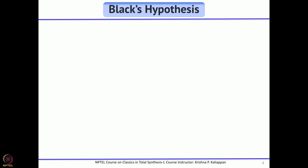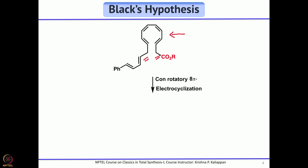Black's group proposed a biogenetic hypothesis. They proposed that if nature started with a tetraene — an octa-tetraene — having two side chains at the terminal carbons, upon heating under thermal conditions, a conjugated tetraene would undergo a thermal electrocyclization reaction. Since it is an 8π electron system, under thermal conditions conrotatory cyclization is allowed, giving cyclooctatriene.